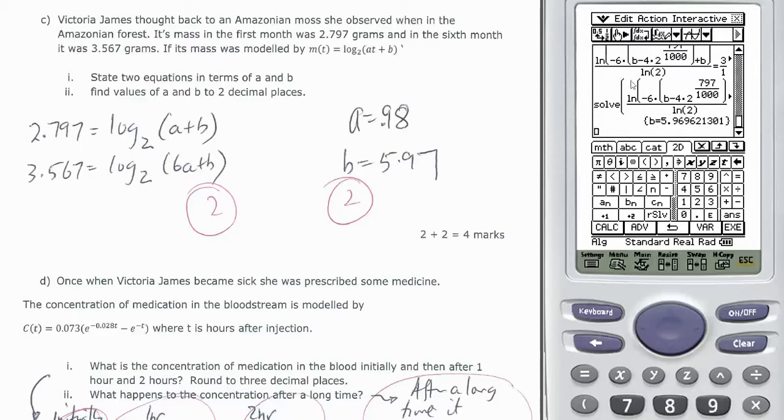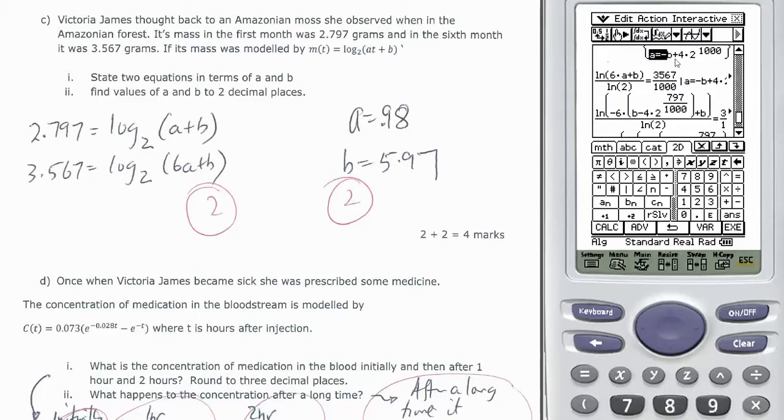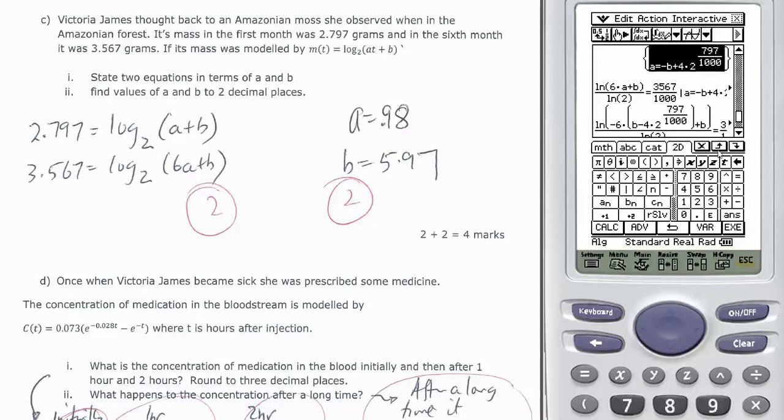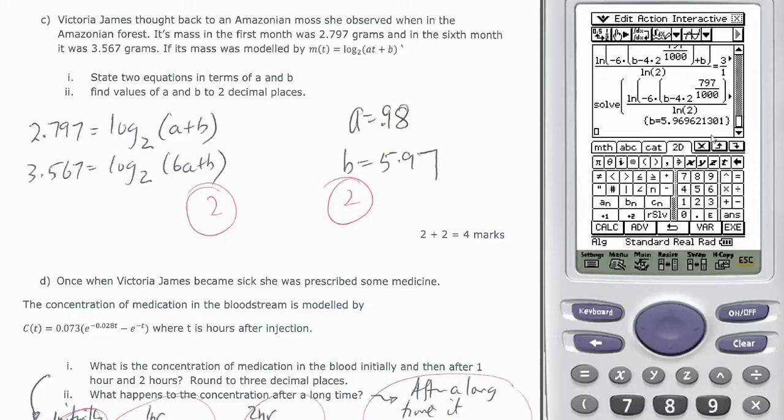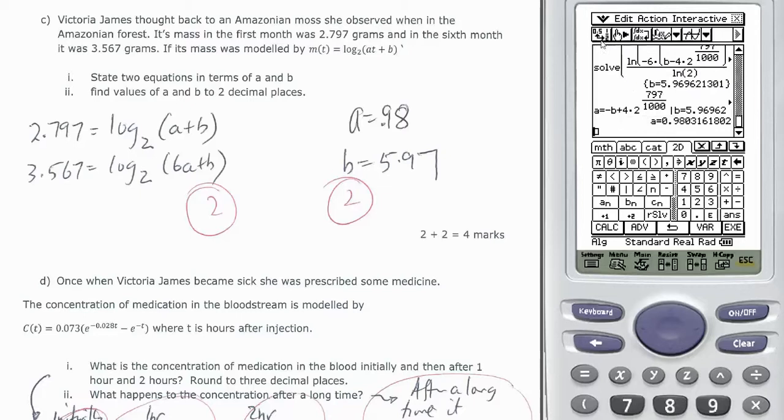And I get an answer for b which is 5.97 and then I can put that answer. I know that a equals this so I copy that and I paste that and I make option given b equals this. And execute that gives me an answer for a which is 0.98 so there's my two answers for a and b.